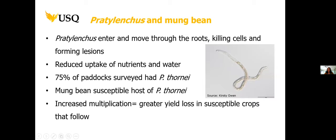A little bit about Pradylenchus — the root lesion nematodes. You can see a lovely picture here courtesy of Kirsty Owen on the right-hand side. Pradylenchus are migratory endoparasites, meaning they enter and move into plant root cells, killing the cells and forming characteristic reddish-brown lesions on the plant. This has an impact on root efficiency and reduces the uptake of nutrients and water.